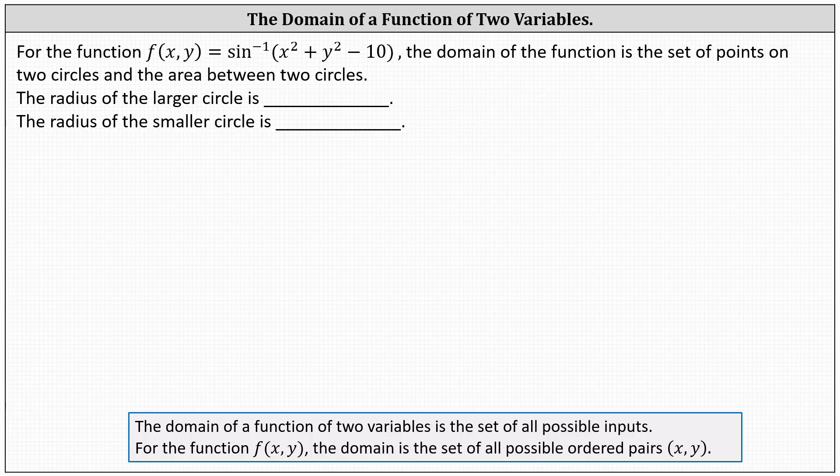Recall the domain of a function of two variables is the set of all possible inputs. For the function f(x, y), the domain is the set of all possible ordered pairs (x, y).